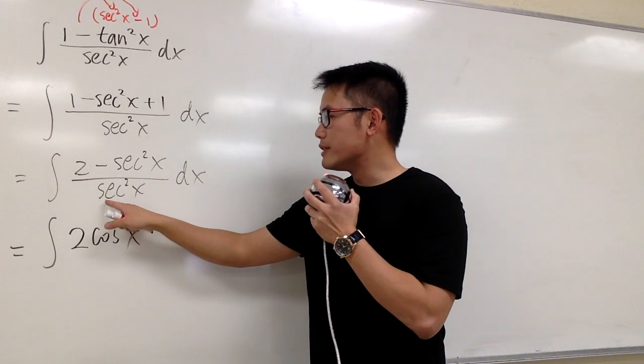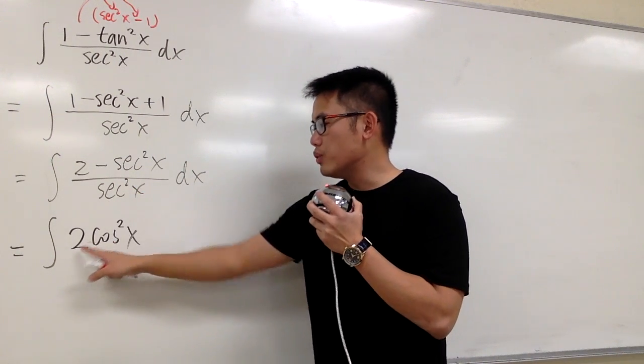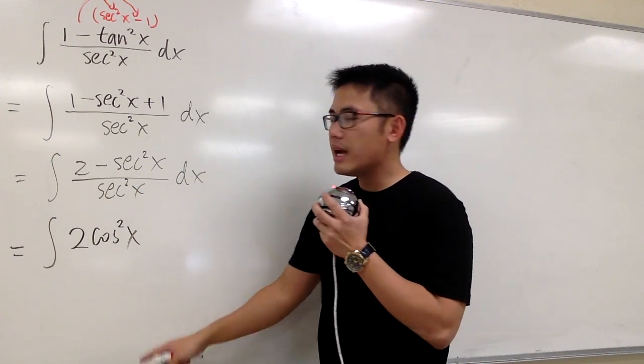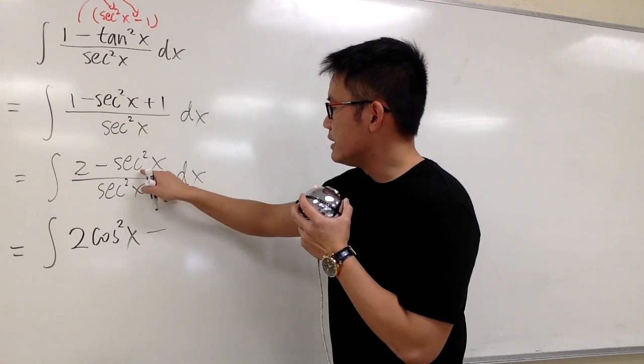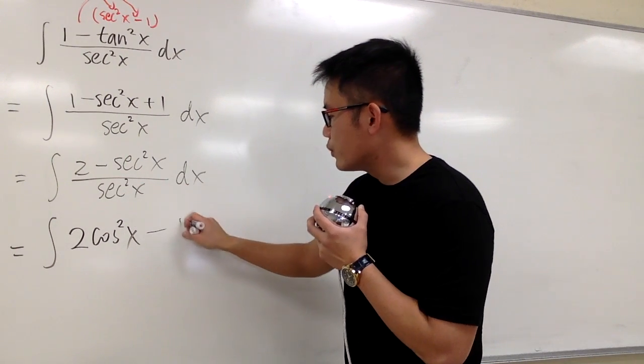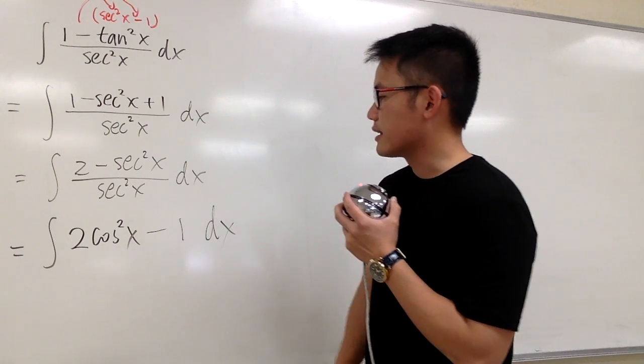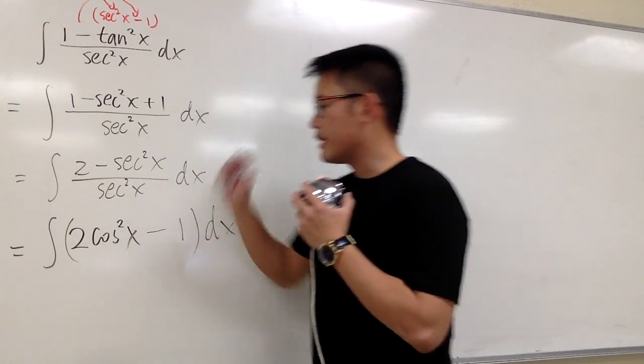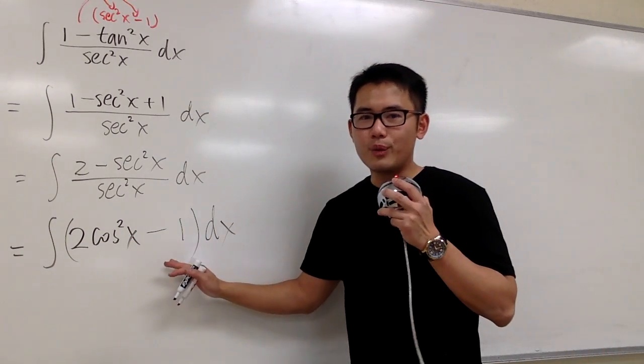2 over secant square x is the same as 2 cosine square x. And then minus secant square x over secant square x, of course, they cancel out, we'll just have 1, and then we put down the dx on the side. And now, let's take a look. How can we integrate this?